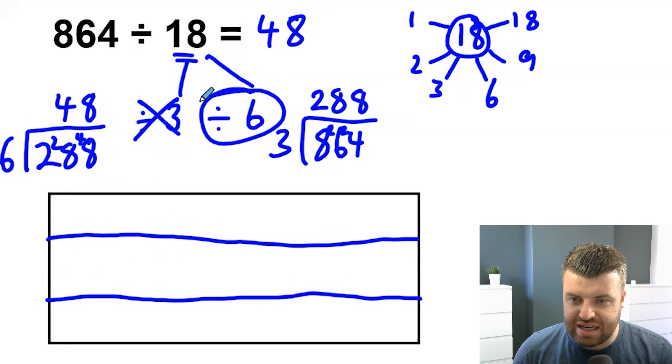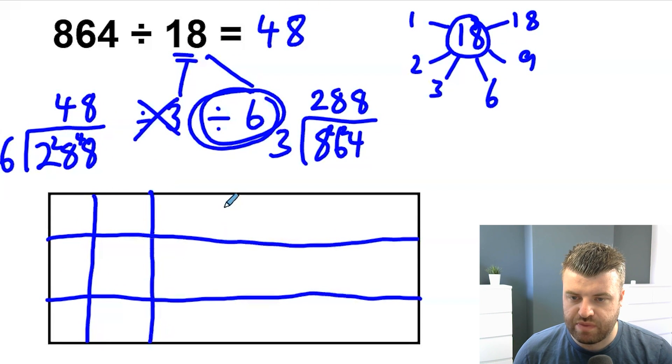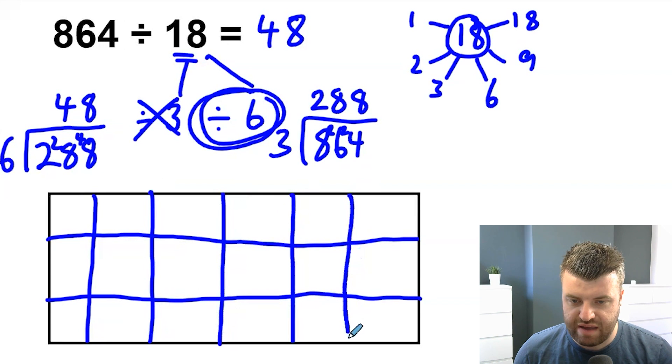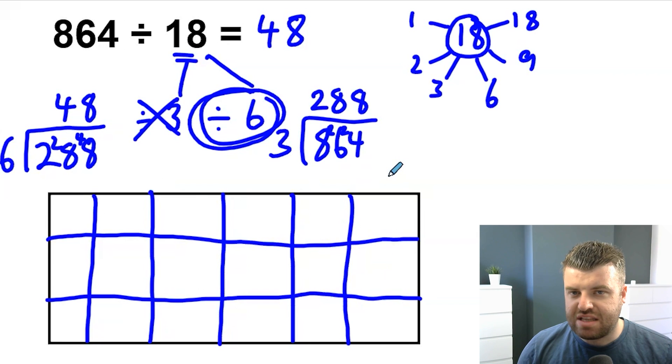And then I'm going to split vertically into 6 parts. So we've got 1, 2, 3, 4, 5, and then 6 has been created at the end. I divided that box by 3, then I divided it by 6.